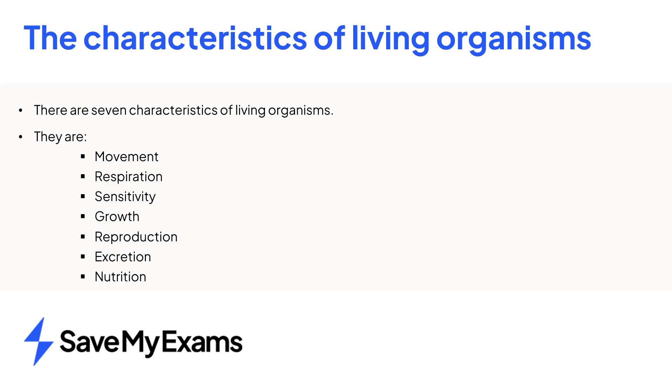In summary, there are seven life processes: movement, respiration, sensitivity, growth, reproduction, excretion and nutrition. You do not need to remember these in this specific order, but the acronym Mrs Gren can really help ensure you don't miss one out.